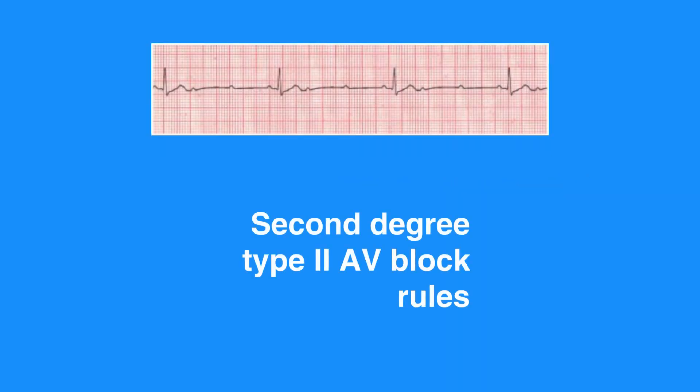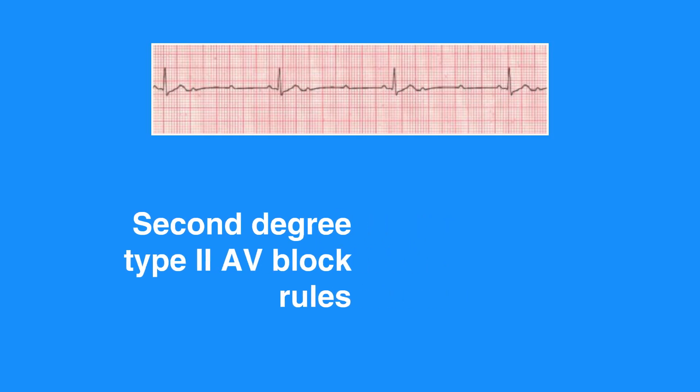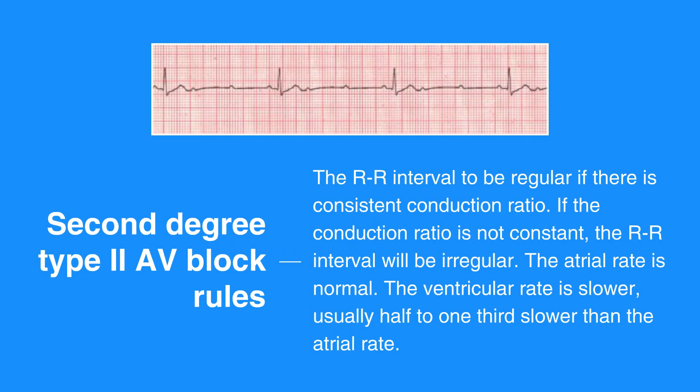Second degree type 2 AV block rules include the RR interval being regular if there is a consistent conduction ratio. If the conduction ratio is not constant, the RR interval will be irregular. The atrial rate is normal. The ventricular rate is slower, usually half to one third slower than the atrial rate. P waves are upright and uniform. There is not a QRS following every P wave. The PR interval can only be measured on conducted beats and is usually constant across the strip. It may or may not be longer than a normal PR interval, which is 0.12 seconds. The QRS complex measures less than 0.12 seconds.